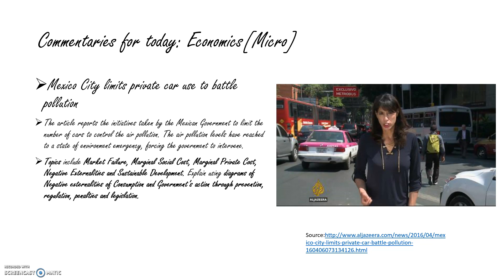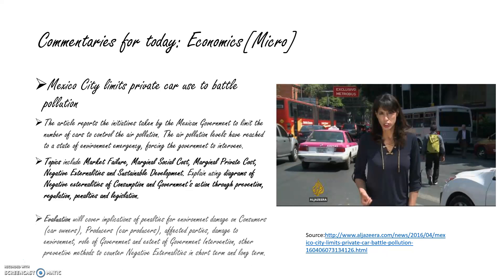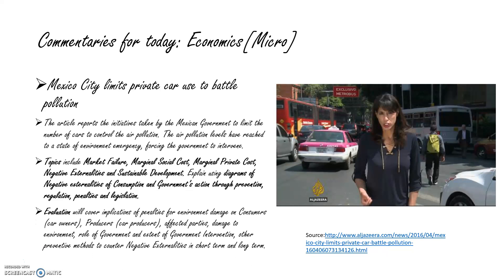You can explain using diagrams of negative externalities of consumption and the government's action through prevention, regulation, penalties, and legislation. Evaluation will cover implications of penalties for environmental damage on consumers and car owners, producers and car producers, affected parties, damage to the environment, the role of government and extent of government intervention, and other preventive methods to counter negative externalities in the short-term and long-term.